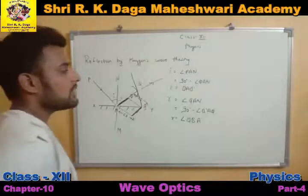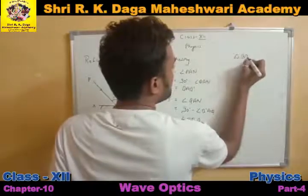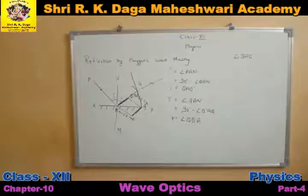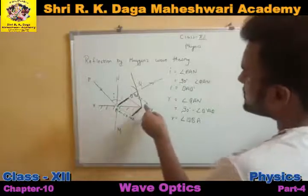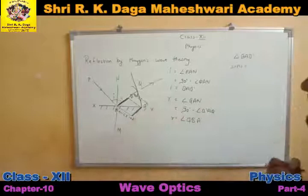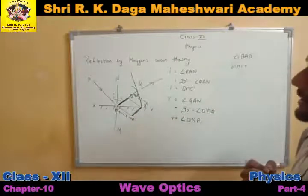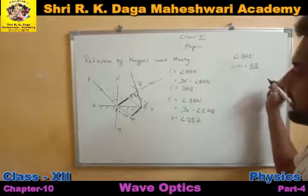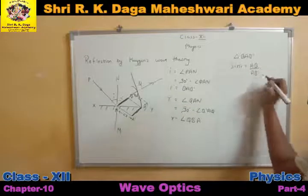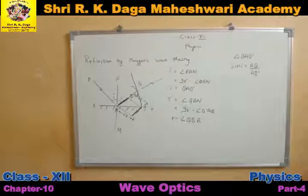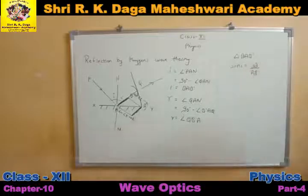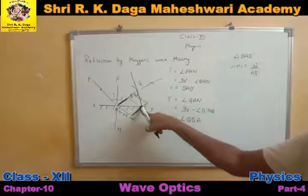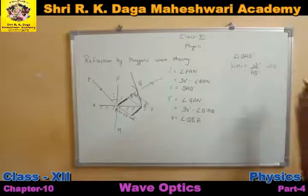Now, in triangle BAB', what do we get? Sine i is equal to perpendicular upon hypotenuse. The perpendicular is BB' and the hypotenuse is AB'. So sine i equals BB' upon AB'. This is equation number 1. Now in triangle QB'A, sine r will be perpendicular upon hypotenuse. The perpendicular is QB' and the hypotenuse is AB'. So sine r equals QB' upon AB'. This is equation number 2.